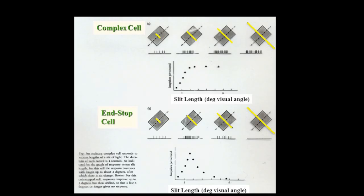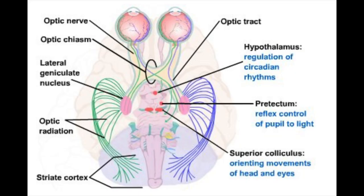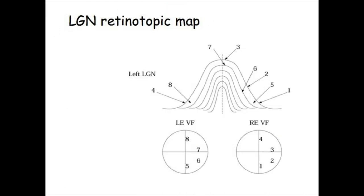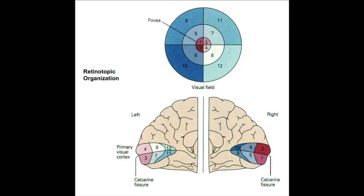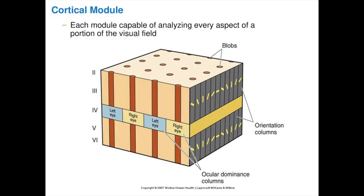A third type is the end-stop cells, which respond to moving bars of a specific length and corners and edges. The retinotopic projections from the retinal ganglion cells holds the organization of the retina in such a way that the entire visual field corresponds to a small patch of the cortex, which altogether makes a binocular visual field with some overlap. These small patches are 2x2 mm chunks of cortex called cortical modules. These chunks are made up of two complete sets of ocular dominance columns, 16 blobs, and, in the cells between the blobs, a complete sampling twice over of all 180 degrees of possible orientation.